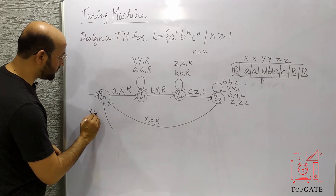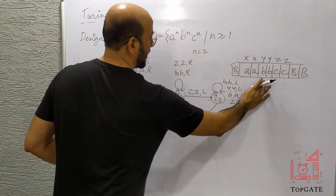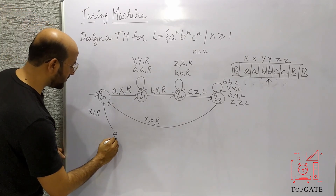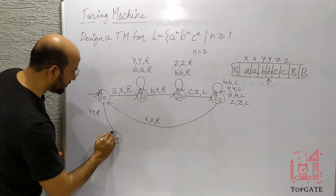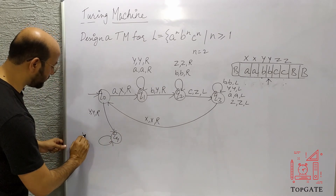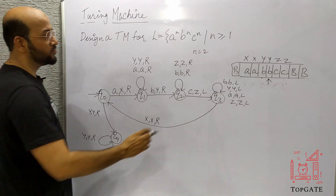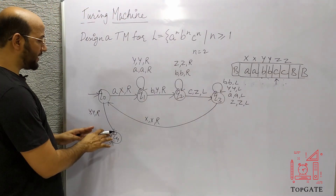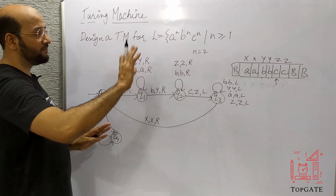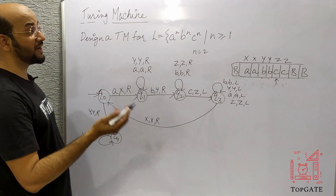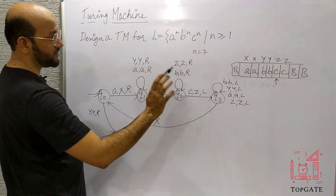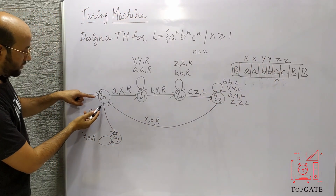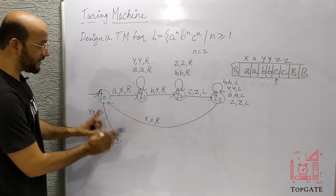At Q4, I take a self-loop: Y stays Y and moves right, skipping all Y's. Once all Y's are skipped I find Z, meaning Y's are ended. Now I check for Z — skipping with Z stays Z moving right. I should not encounter any B or C at this stage since A's are exhausted.